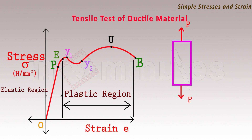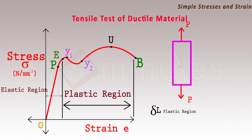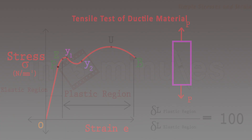Up to point E the stress-strain curve is in the elastic region, whereas beyond point E it is in the plastic region. If we consider the ratio of the strain of the plastic region to the strain of the elastic region and plot the stress-strain curve to true scale, we find that the ratio of deformation is in the range of 100 for most ductile materials. With this, our topic is over. Thank you.